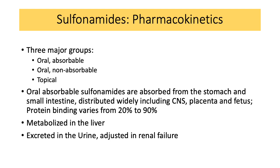In discussing pharmacokinetics, it's best to describe them in groups. The first group is oral absorbables, the second is oral non-absorbable, and the last are topicals. Oral absorbable sulfonamides are absorbed from the stomach and small intestine and have wide distribution including the CNS, placenta, and the fetus. Protein binding varies from 20% to 90%. They undergo metabolism in the liver and are excreted in the urine, therefore requiring adjustments in renal failure.